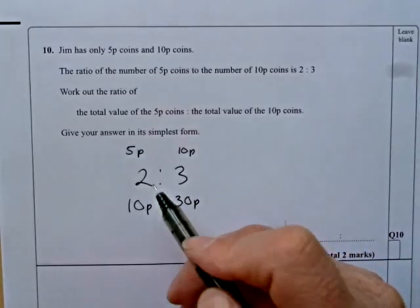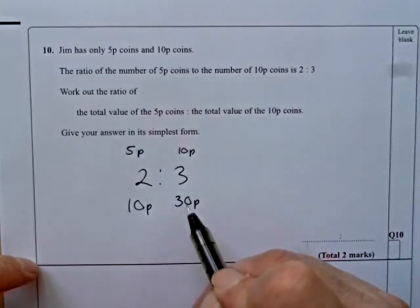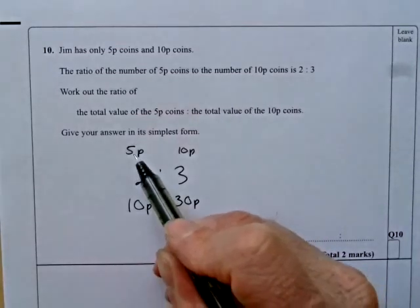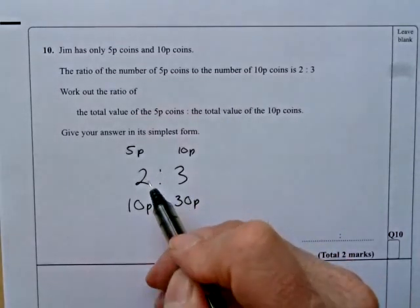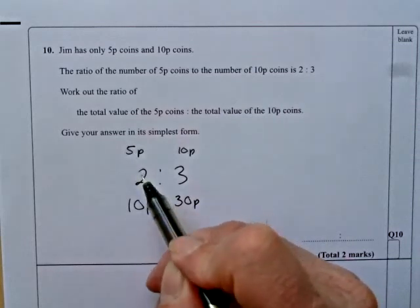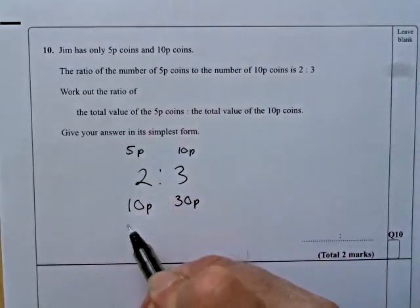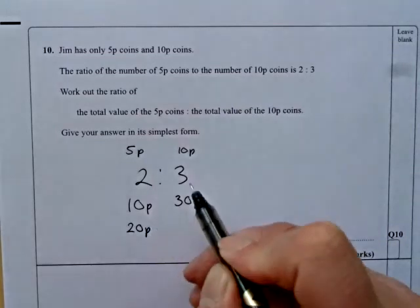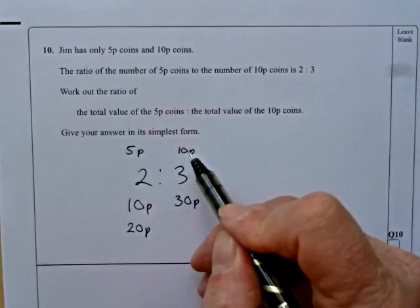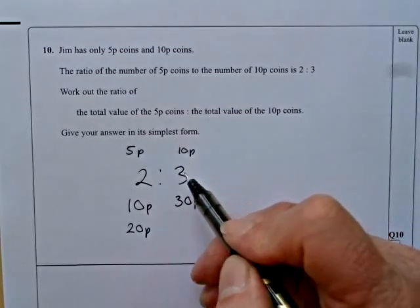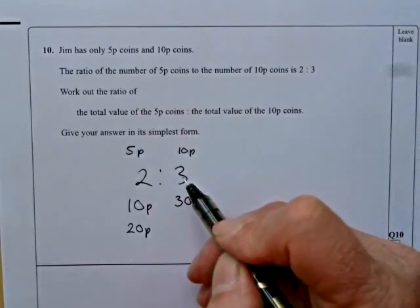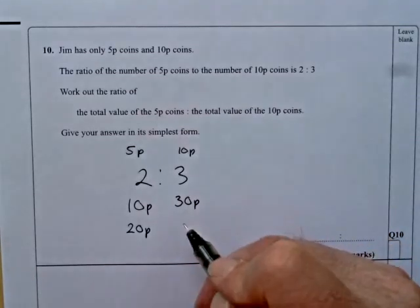Now, as long as I kept the ratio the same here, then the ratios that I create from the values... So you might say, well, what if you had more than 2 5ps? What if you had 4 5ps? Well, that would give me 20p. But if I had 4 lots of 3 10ps, so if they're in the ratio, then that would be up at 60p.